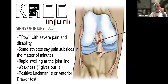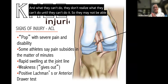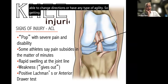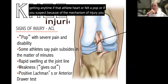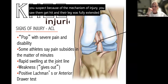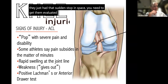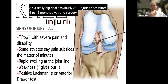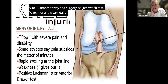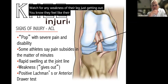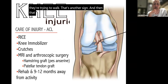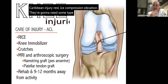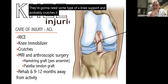After the initial pain subsides from an ACL injury, athletes may not realize what they can't do until they can't do it — they may be unable to make sudden starts and stops or change direction. Anytime an athlete hears or feels a pop, or if the mechanism of injury suggests ACL involvement — leg fully extended on a sudden stop or in-space injury — get them evaluated. ACL injuries typically necessitate nine to twelve months away from activity and surgery, so this is a very big deal. Also watch for leg weakness or giving out when walking.